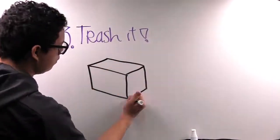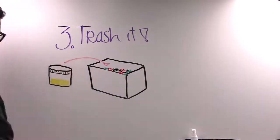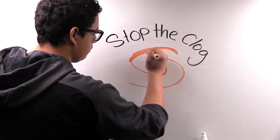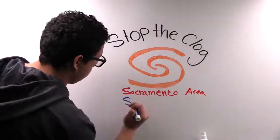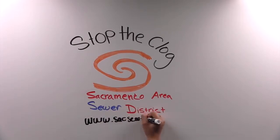Three: Trash it. Put the fatty food scraps in the garbage, not down the drain. Help stop the clog today. Learn more at www.sacsewer.com.